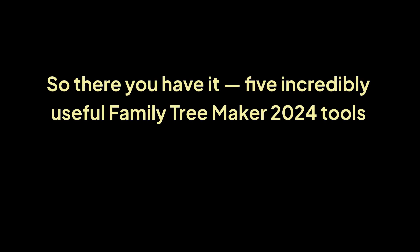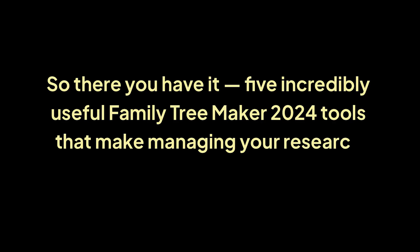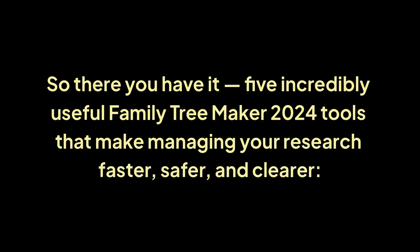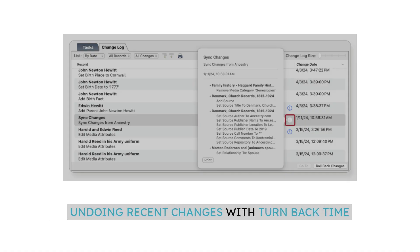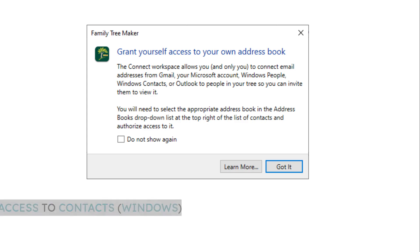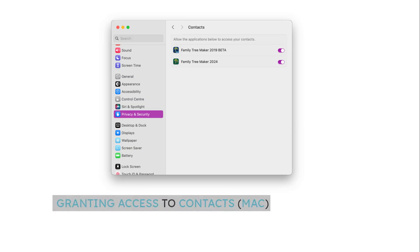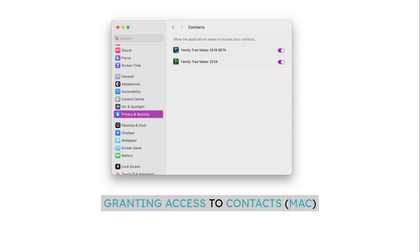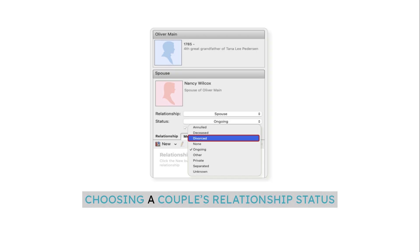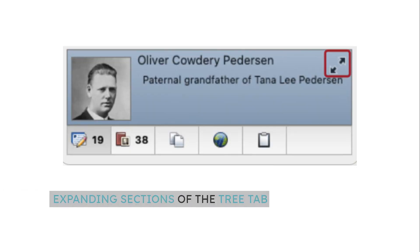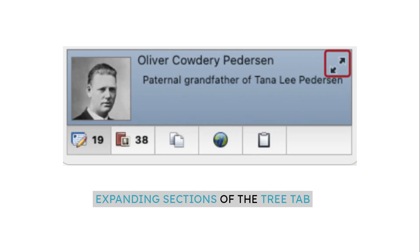So there you have it — five incredibly useful Family Tree Maker 2024 tools that make managing your research faster, safer, and clearer: Undoing Recent Changes with Turn Back Time; Granting Access to Contacts on Windows; Granting Access to Contacts on Mac; Choosing a Couple's Relationship Status; and Expanding Sections of the Tree Tab.